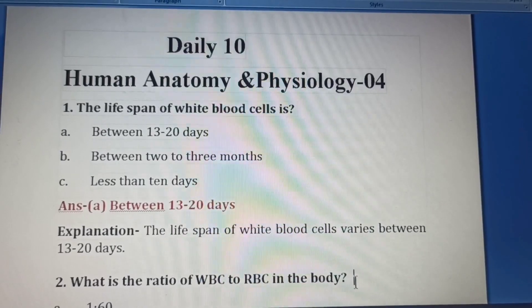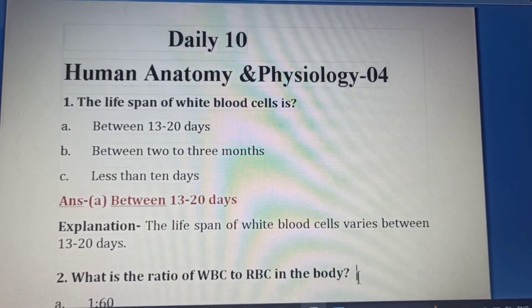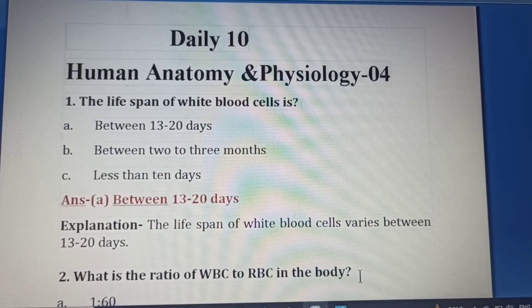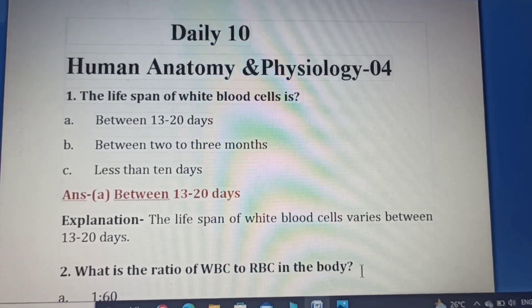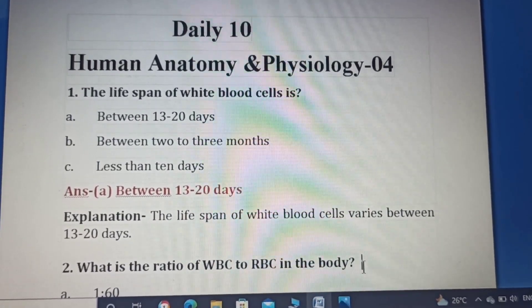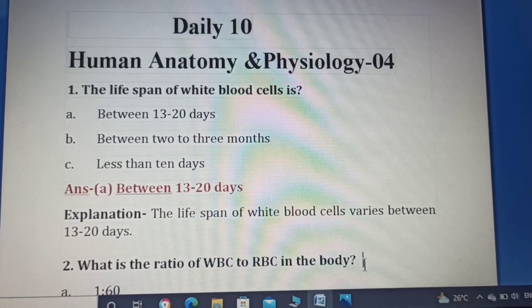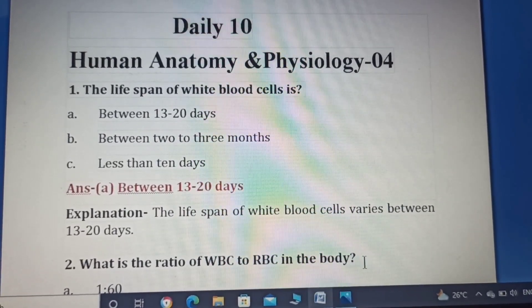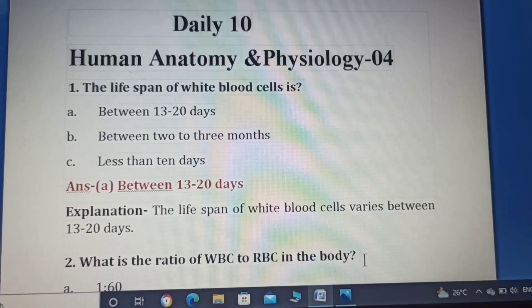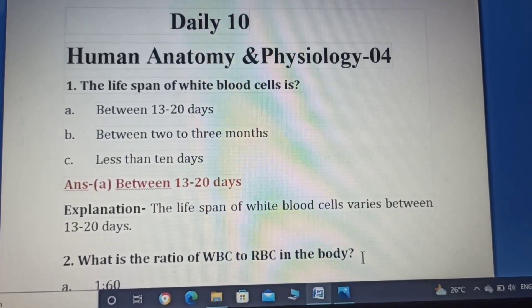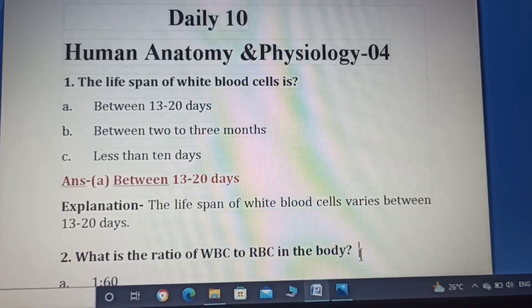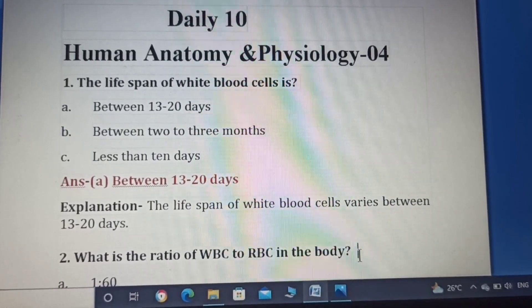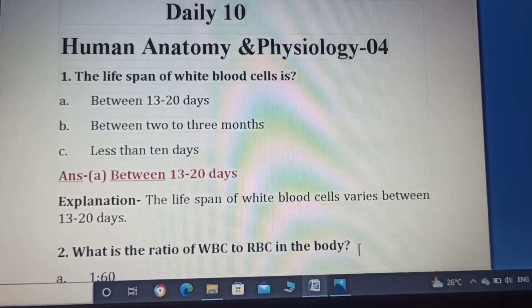First question. The lifespan of WBC cell is — Option A: between 13 to 20 days, Option B: between 2 to 3 months, Option C: less than 10 days. The answer is Option A: between 13 to 20 days. The lifespan of WBC cell varies between 13 to 20 days.